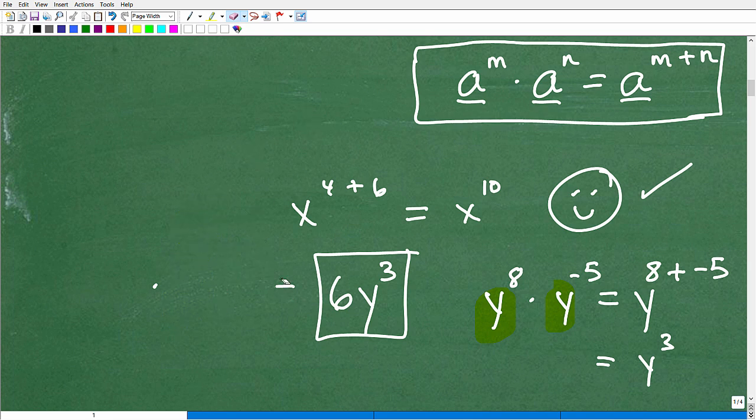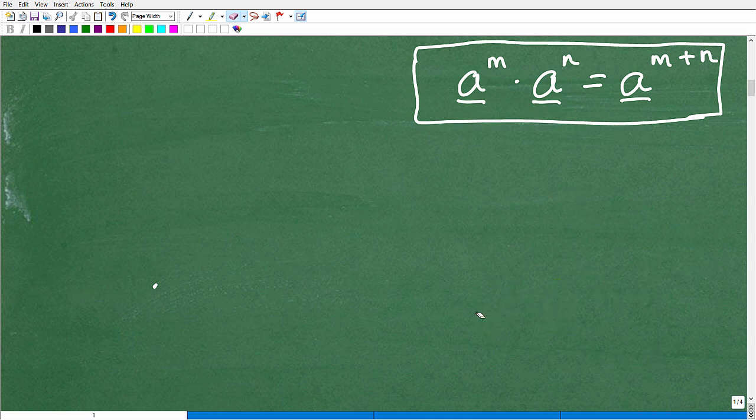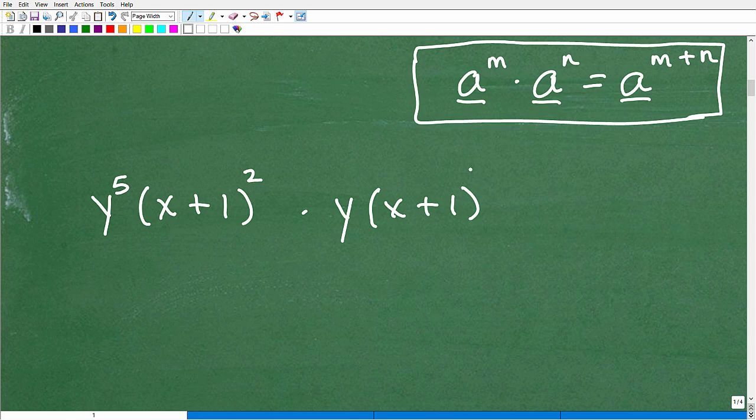All right. We'll give you one or two more quick examples and then we'll call it a wrap for this video. So this applies to any kind of algebraic situation. What if I had Y to the 5th times X plus 1 squared times Y times X plus 1 to the 7th. So looking at this, you're like, boy, what do I do? If you think you know how to do this problem, go ahead and maybe pause the video and write your answer down.